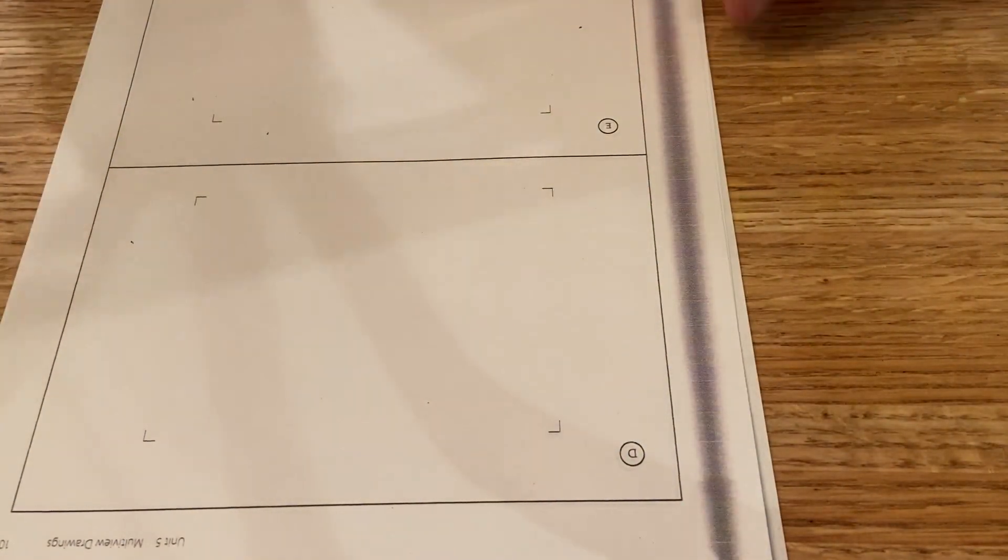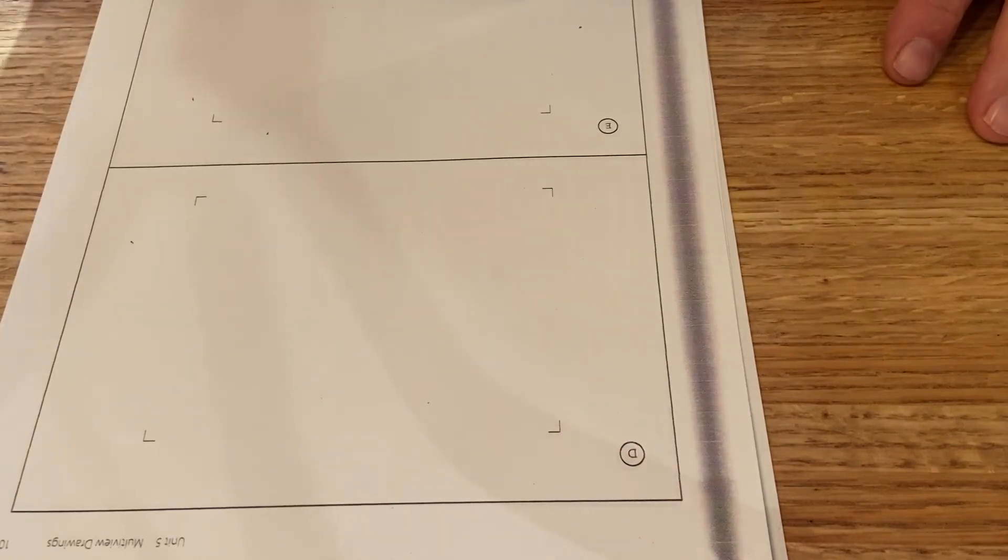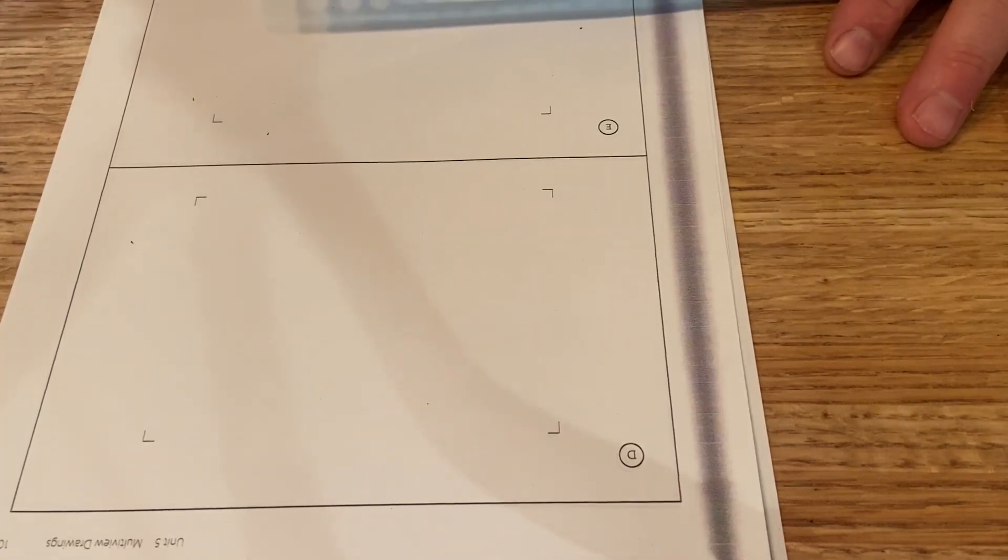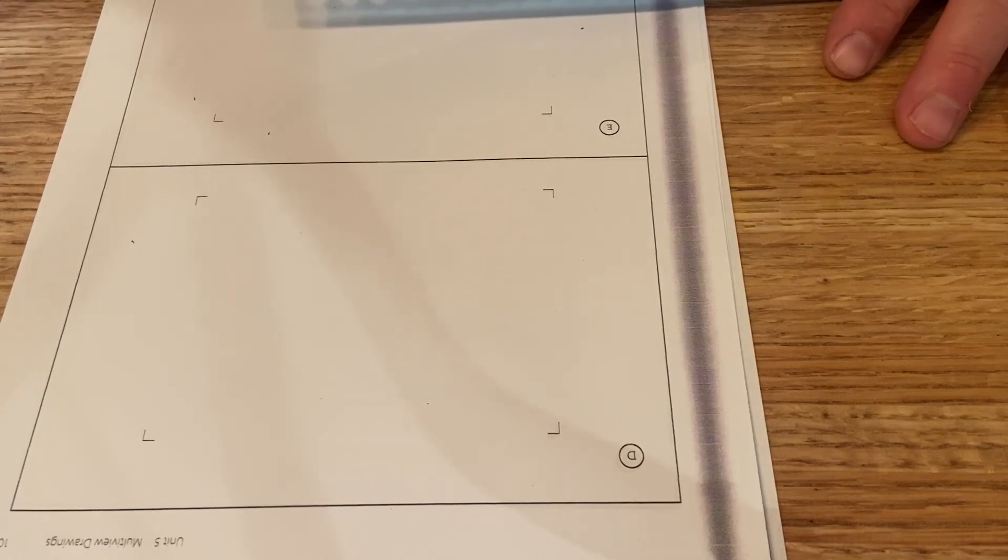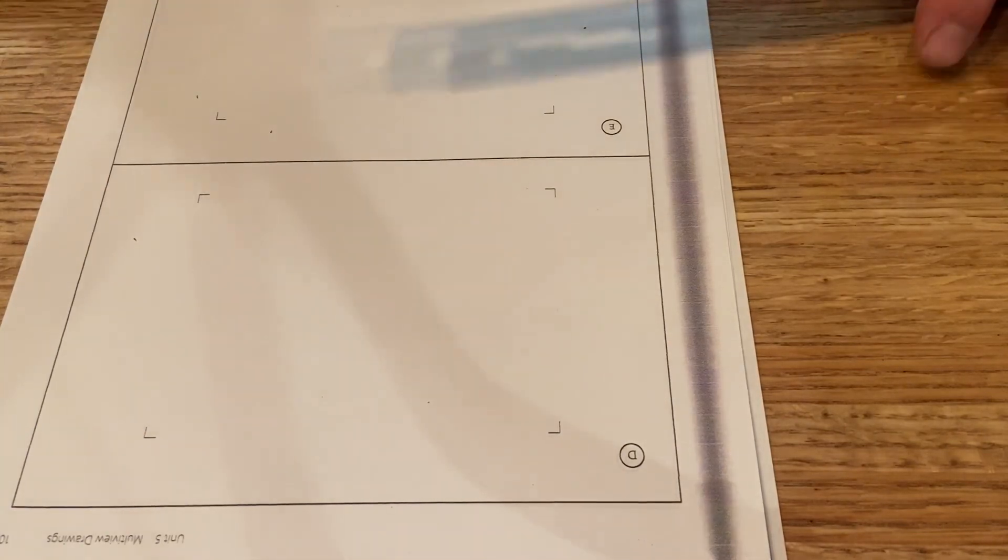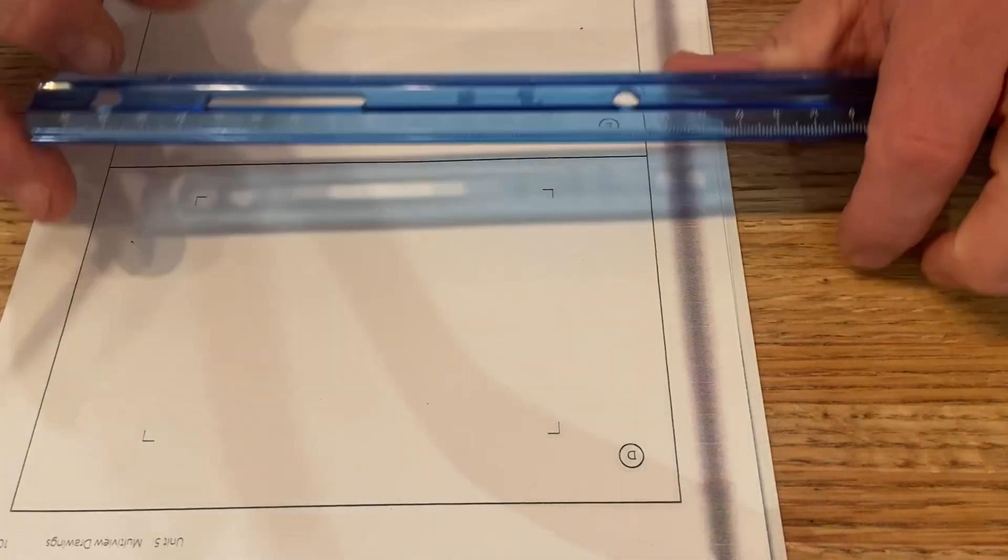All right, so I'm going to work on the next problem here on our multi-view drawings. It is important to remember that these objects have a width of 8, a height of 5, and a depth of 4.